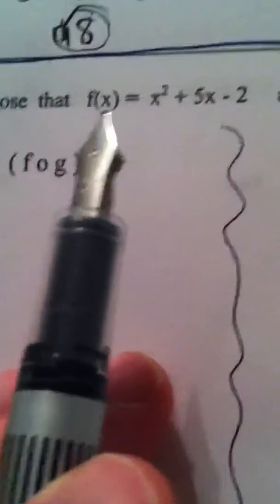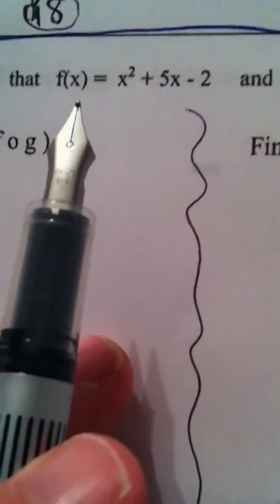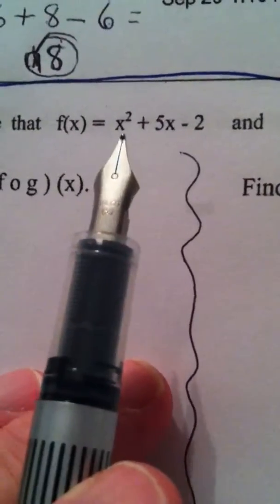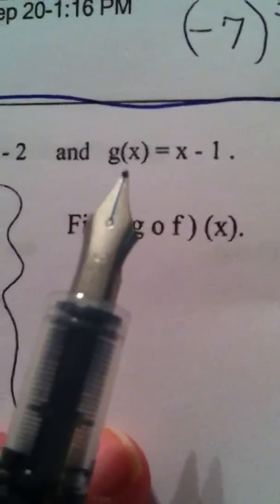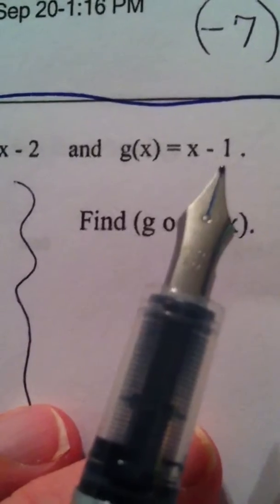Okay, on the next example, we're given two functions. We're given the function f of x equals x squared plus 5x minus 2, and we're given the function g of x equals x minus 1.